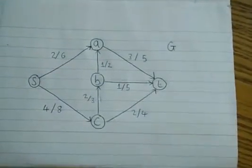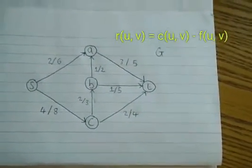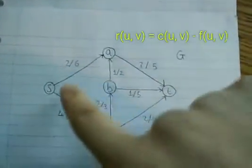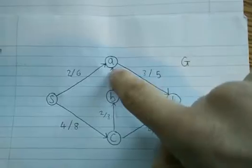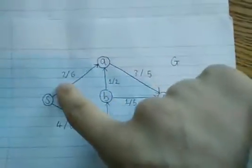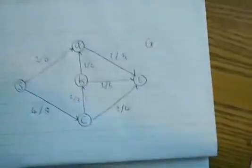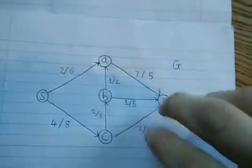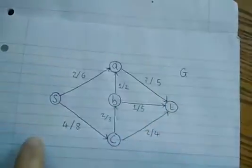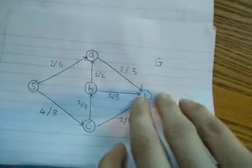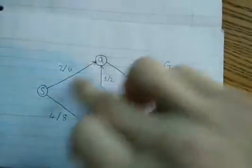where the residual capacity of an edge is the capacity of that edge minus the flow. So for example, this edge S to A, the residual capacity would be 6 minus 2, which equals 4. After finding all the residual capacities, you also add an edge for each edge in the opposite direction, where the capacity of that edge is the flow from the original edge.